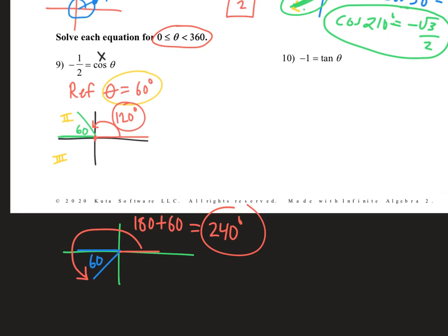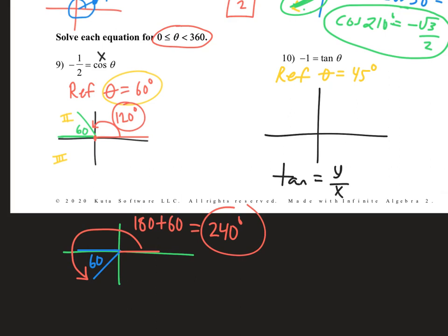Number 10 — the tangent. When does tangent equal negative 1? Let's find the reference angle and then put it in the correct quadrants. We really need to know where the tangent is negative 1. Tangent is y over x. In quadrant 1, y and x are both positive, so y over x is positive. In quadrant 2, the y's are positive but the x's are negative, so y over x would be negative if you had one of each.